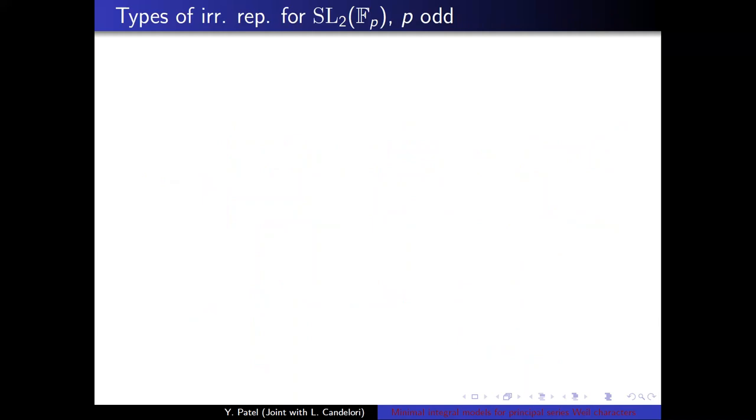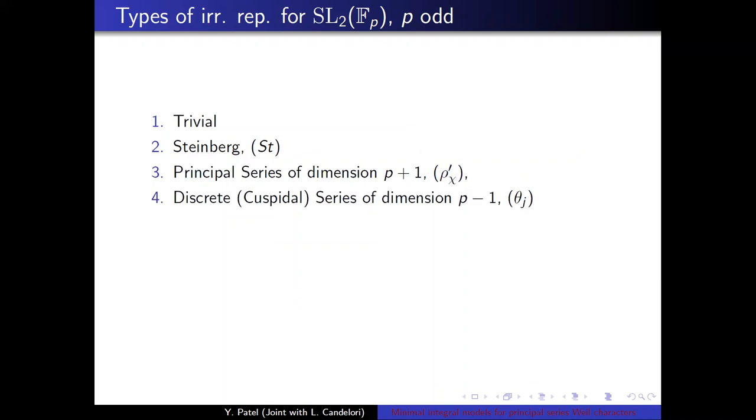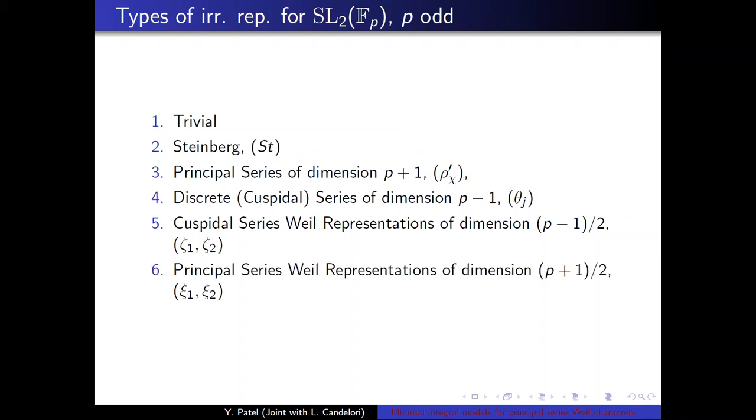So what are the types of irreducible representations for SL2Fp p-odd? Well, there's a trivial, there's a Steinberg, there's a principal series of dimension p plus one, there's a discrete cuspidal series of dimension p minus one, there are two cuspidal series representations of dimension (p-1)/2, and the principal series Weil representation of dimension (p+1)/2. So we know how to construct these irreducible representations of SL2Fp. A follow-up question involves determining the smallest ring that contains the entries of these irreducible representations.